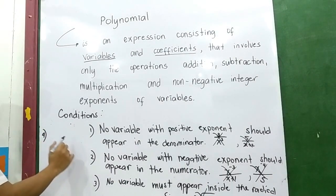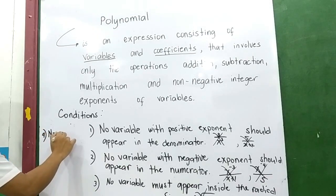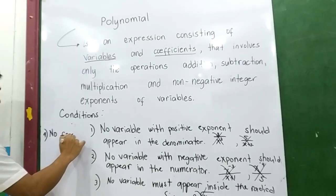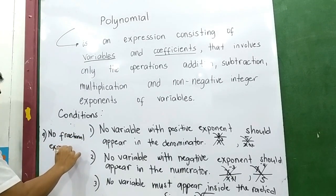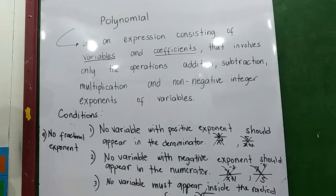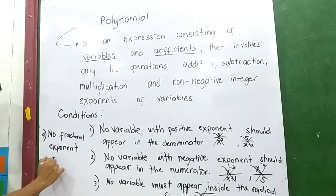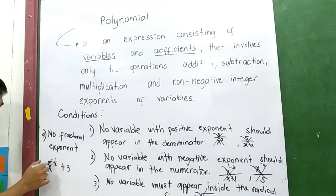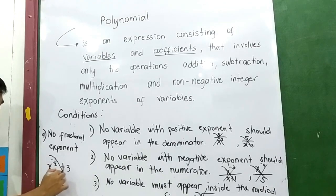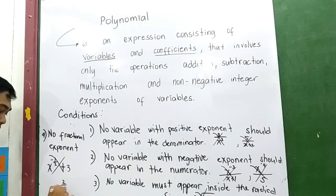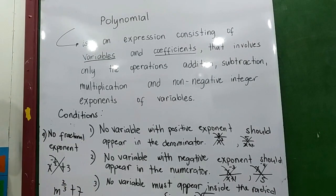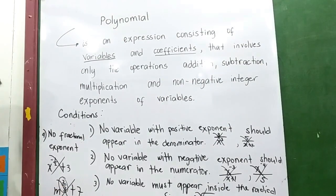The fourth condition: the expression must not contain a fractional exponent. That means if the expression is x raised to negative one-half plus 3, the exponent is both fractional and negative, so it is not a polynomial. Similarly, x raised to 2 over 3 plus 7 — the exponent is a fraction, therefore it is not a polynomial.